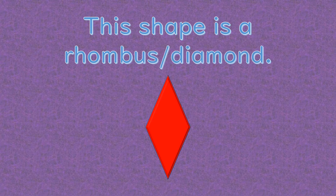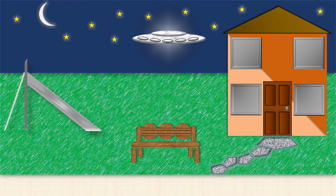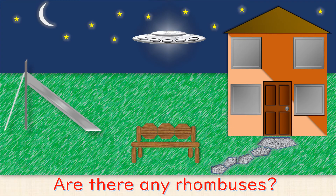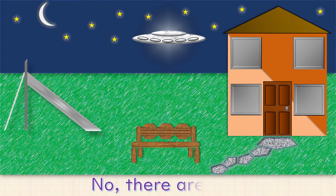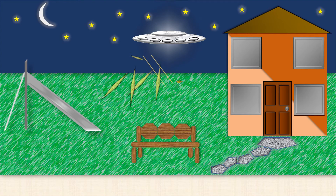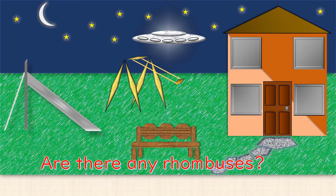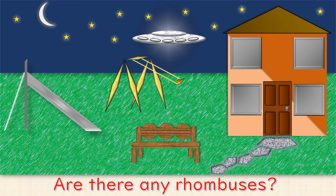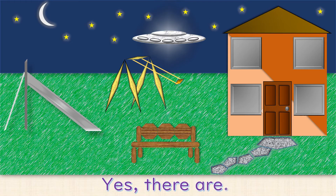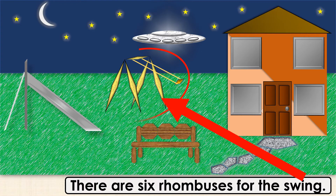This shape is a rhombus or diamond. Are there any rhombuses? No, there aren't. Are there any rhombuses? Yes, there are. There are six rhombuses for the swing.